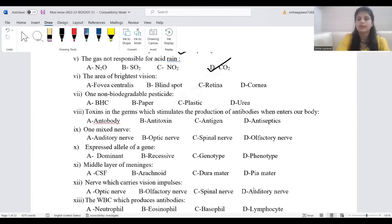Carbon dioxide forms carbonic acid which is a weak acid. It will not cause the acid rain. The area of brightest vision is the fovea centralis.